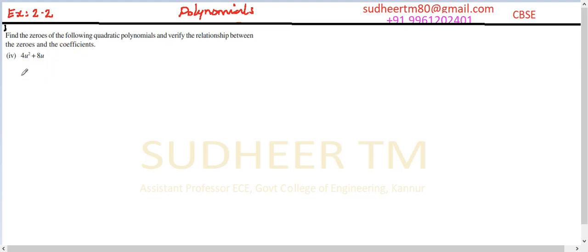So here polynomial in u is given. Polynomial in u is equal to 4u square plus 8u plus 0. Now, let us consider the coefficients: a here is 4, b is 8, and c is 0. So let us start with our solution.